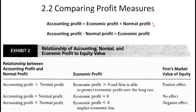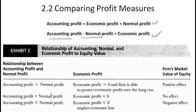Accounting profit equals economic profit plus normal profit. From that you can derive: if given accounting profit and normal profit, you can find economic profit. If accounting profit is greater than normal profit, this is a very good sign — it means economic profit is positive, the firm is creating value, and the market value of the firm will go up. More than normal profit is supernormal, hence the name.